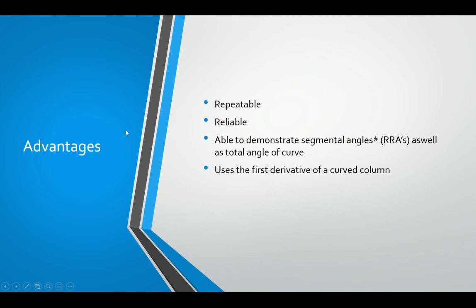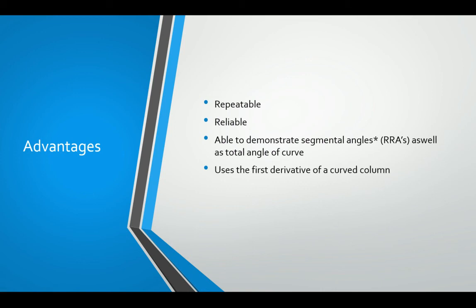The advantages of using the posterior tangent method include that it has high repeatability and reliability with regards to intra-class coefficients and scientific scrutiny — both intra- and inter-examiner reliability. Not only will the same examiner end up with the same numbers, but so will somebody else, giving it high inter- and intra-examiner reliability. It's able to easily demonstrate segmental angles of rotation or RRAs as well as the total angle of curve. Because it uses the first derivative of a curved column or slope, it is more mathematically sound to use this method rather than the Cobb angle, which uses cross-sections through the curve rather than tangents along it.